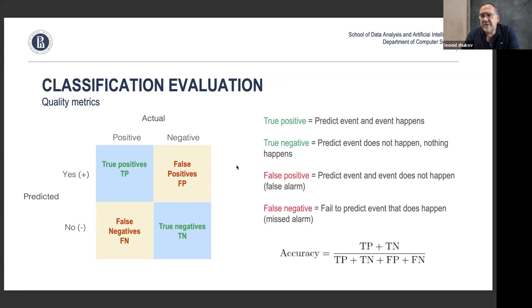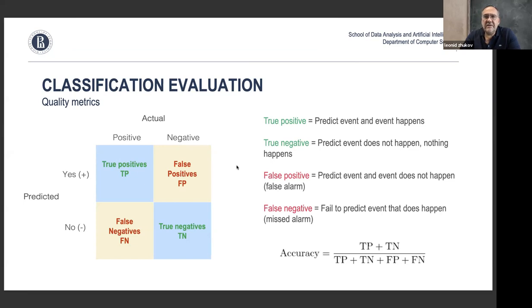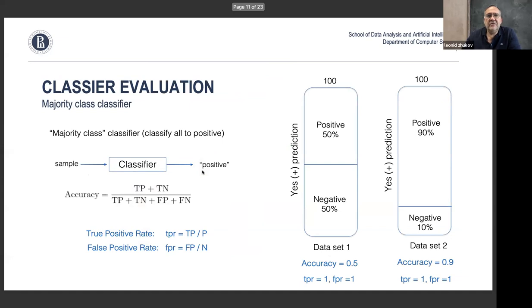One of the simplest metrics is accuracy — the number of correct predictions divided by the total number of predictions, i.e., (true positives + true negatives) / total. For example, if we correctly predict 70 out of 100 items, accuracy is 70%. Unfortunately, just accuracy is not a good metric, as I'll explain with a simple example.